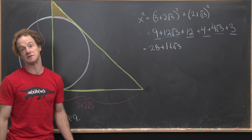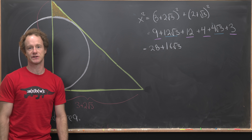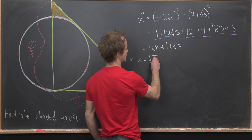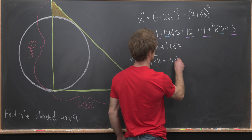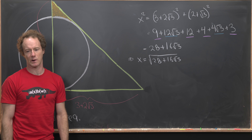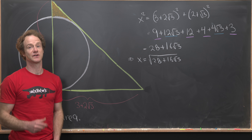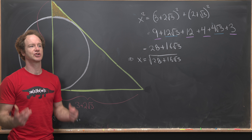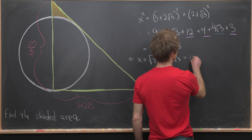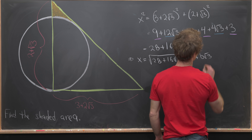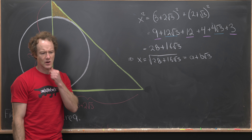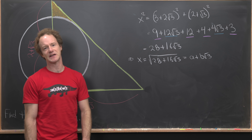So x squared equals 28 plus 16 times the square root of 3, and the hypotenuse itself is the square root of 28 plus 16 times the square root of 3. But there's a nice trick to denest this square root. We assume it can be rewritten as a plus b times the square root of 3, where a and b are integers — which is only possible sometimes, but it works in this case.